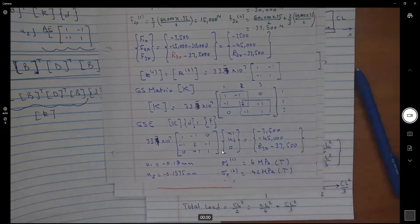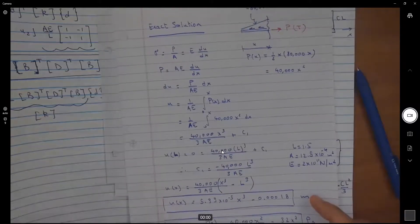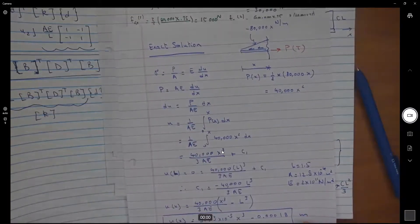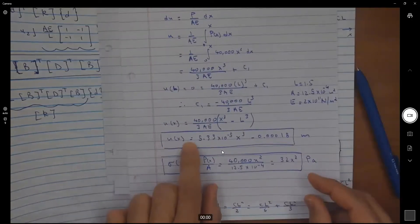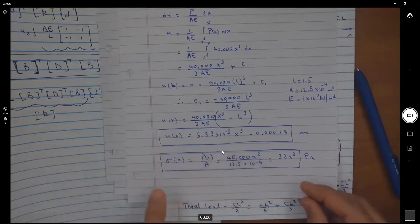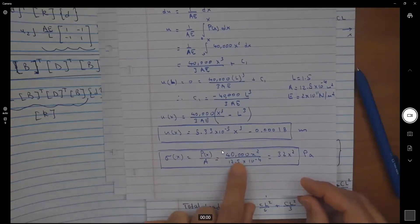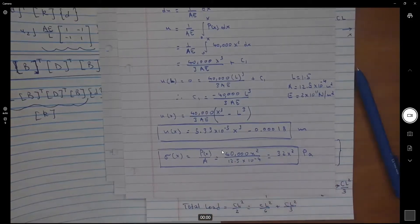We are getting closer to the exact solution, but we don't yet have the exact solution. If I work the exact solution analytically, continuous system, I can find that U of x is a cubic function of x, expressed as an x cubed function. And the stress is expressed as 32 x squared.